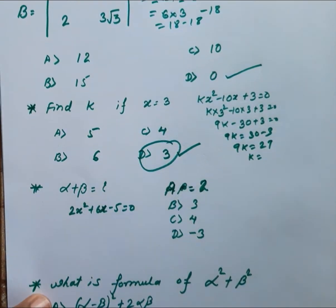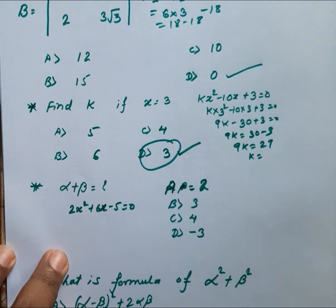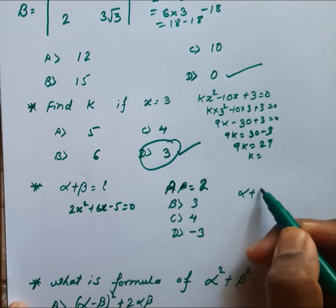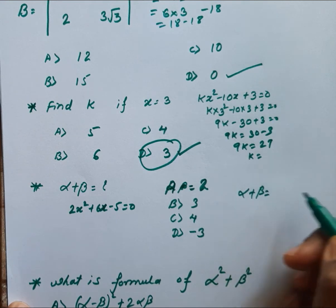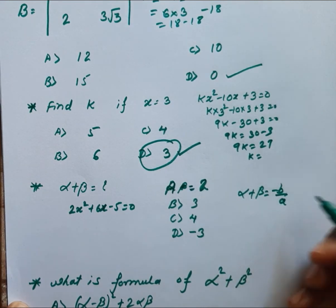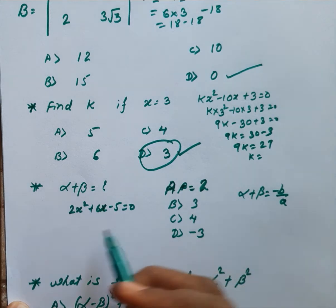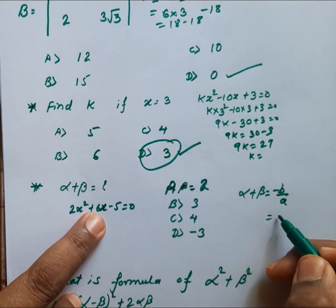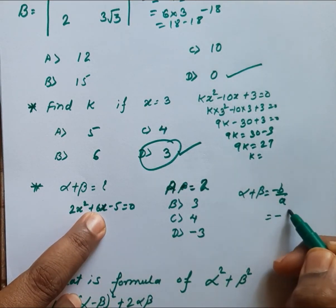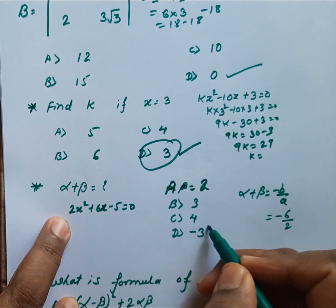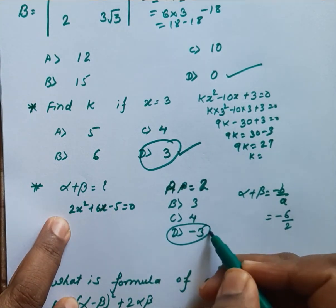Next question: alpha + beta equals what? The formula for alpha + beta is −B/A. Substituting: −B is 6 and A is 2, so the answer is −3.